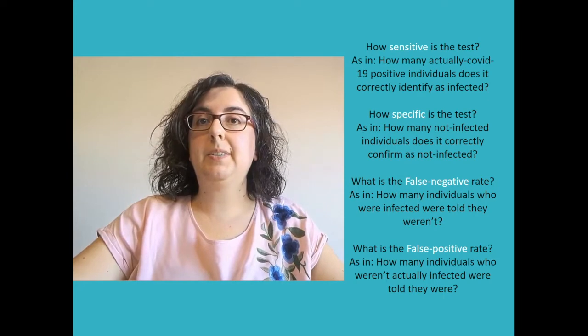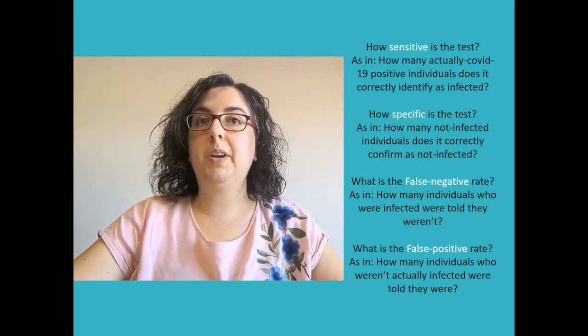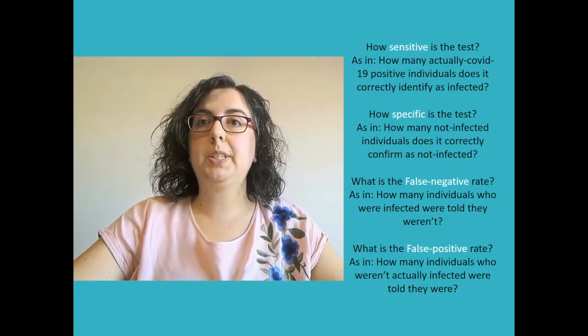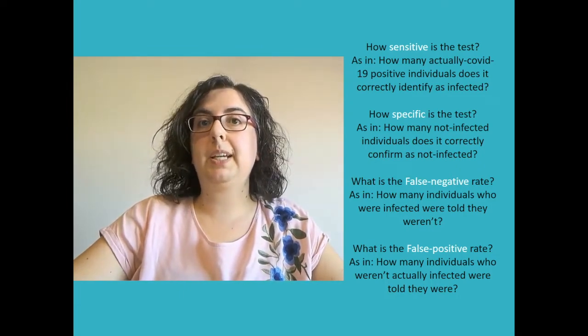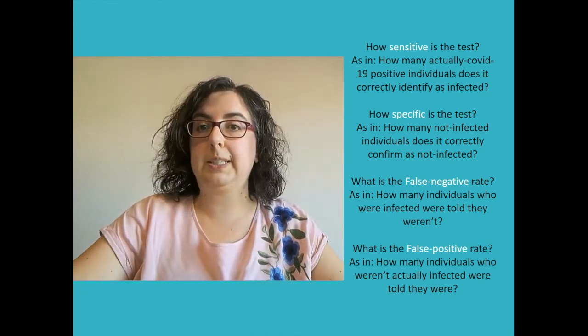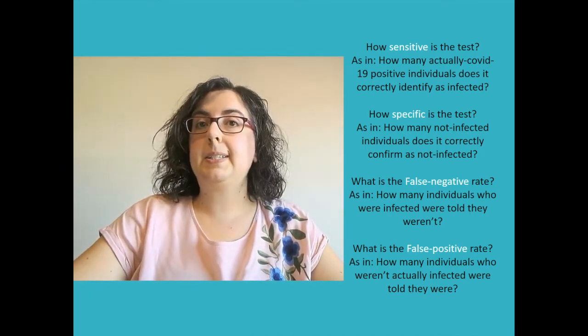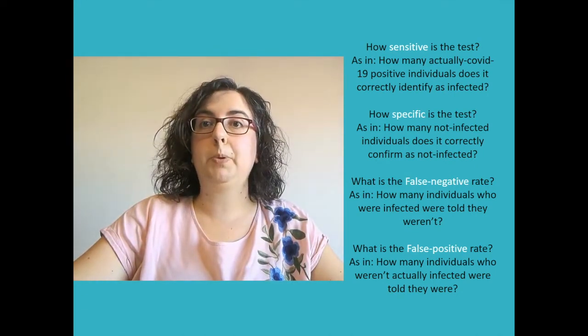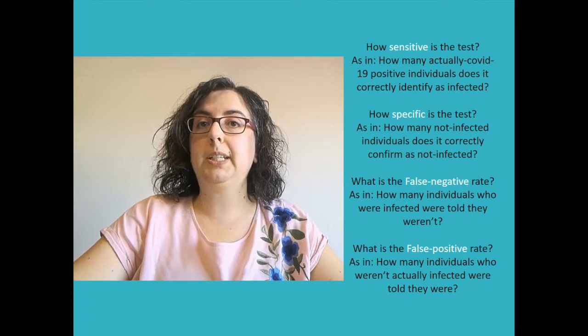For sensitivity, we indicate the ratio between the true positive and the total of people tested that have the antibody, the true positive plus the false negative, like people that have the antibodies but are not detected as positive by the serological test. The higher the sensitivity, the lower is the risk to underestimate the number of people that have developed the antibody against the virus.